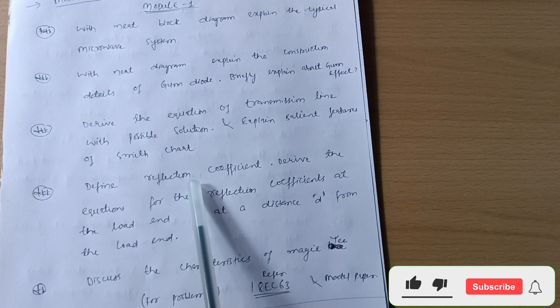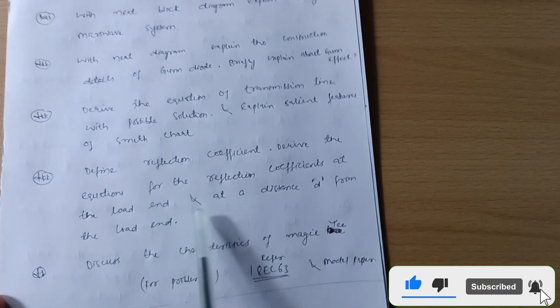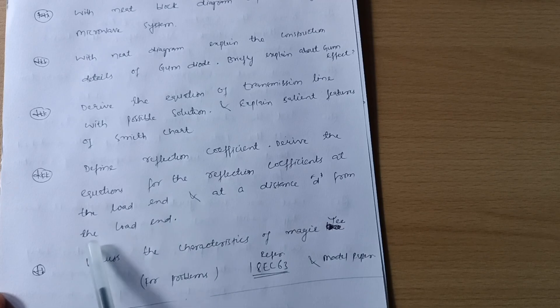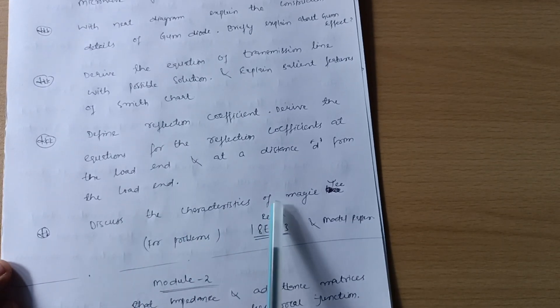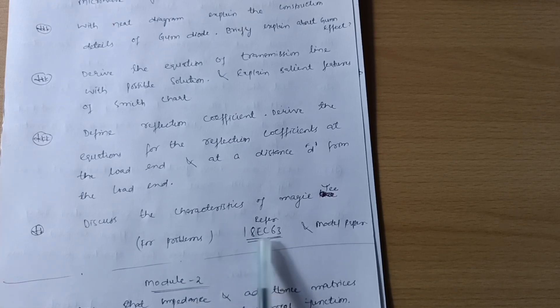Next is define reflection coefficient, derive the equations for the reflection coefficients at the lower end and at a distance d from the lower end. Discuss the characteristics of magic T. As far as numericals or problems are concerned, you should refer 18EC63 and also model paper so that you can cover the varieties of numericals.